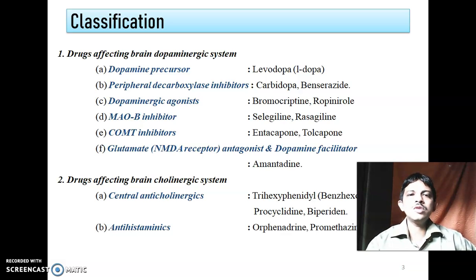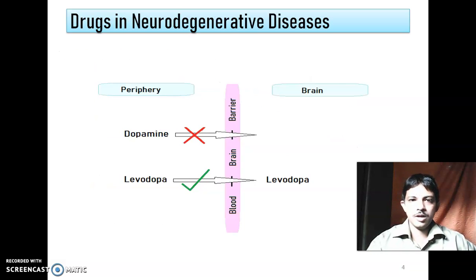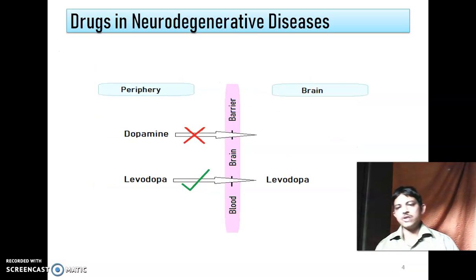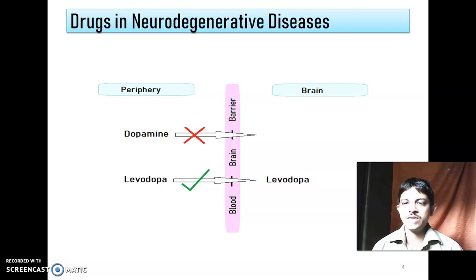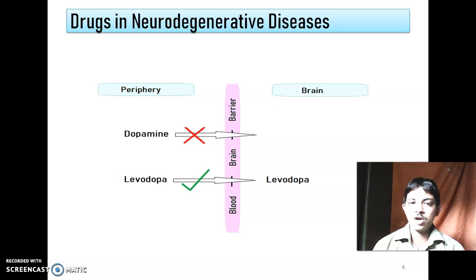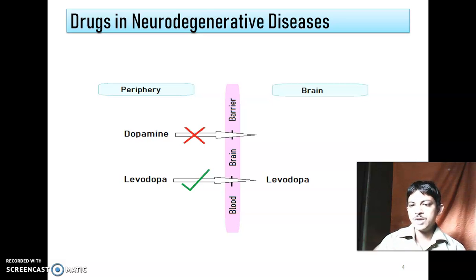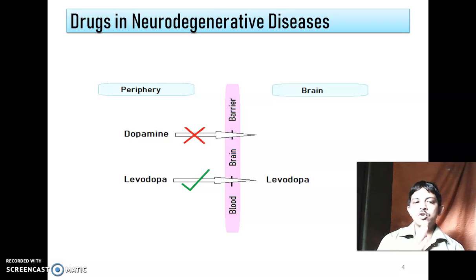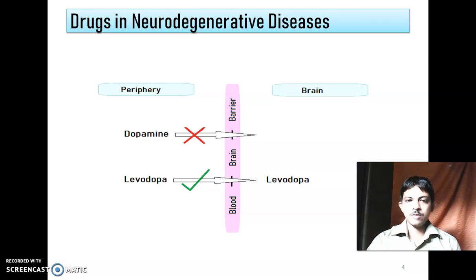We know that the dopamine precursor is levodopa. Why can we not give dopamine directly? Because — unlike insulin deficiency where we give insulin — the main problem is that dopamine cannot cross the blood-brain barrier. Levodopa, however, is easily able to cross the blood-brain barrier, and since levodopa is a precursor, dopamine synthesis will take place from levodopa after it crosses into the brain.